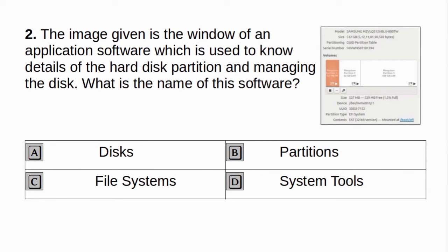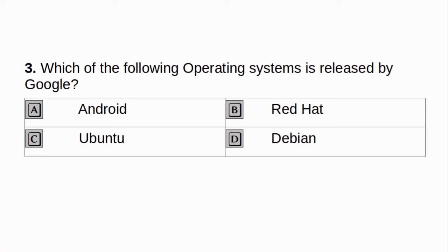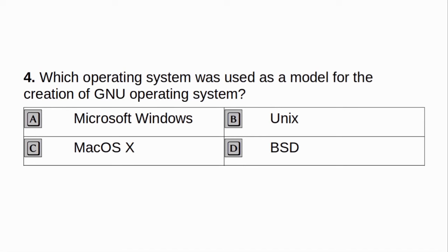The image given is the window of an application software which is used to know details of the hard disk partition and managing the disk. What is the name of this software? a. Disks. b. Partitions. c. File Systems. d. System Tools. Answer: a. Disks. Which of the following operating system is released by Google? a. Android. b. Red Hat. c. Ubuntu. d. Debian. Answer: a. Android.